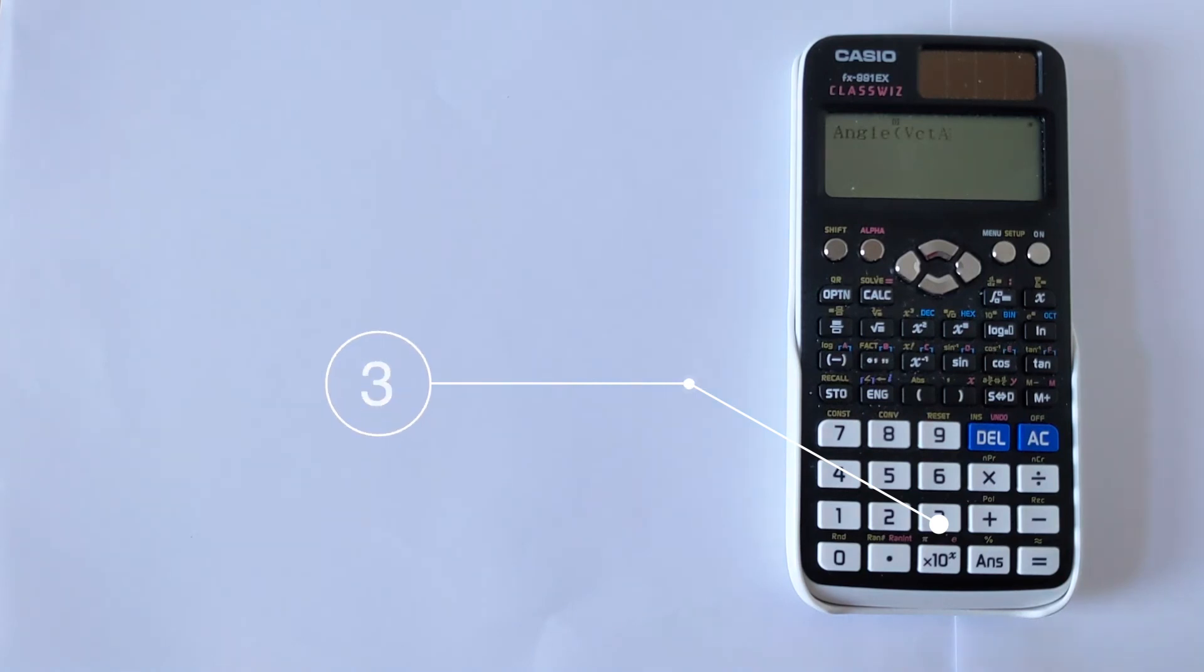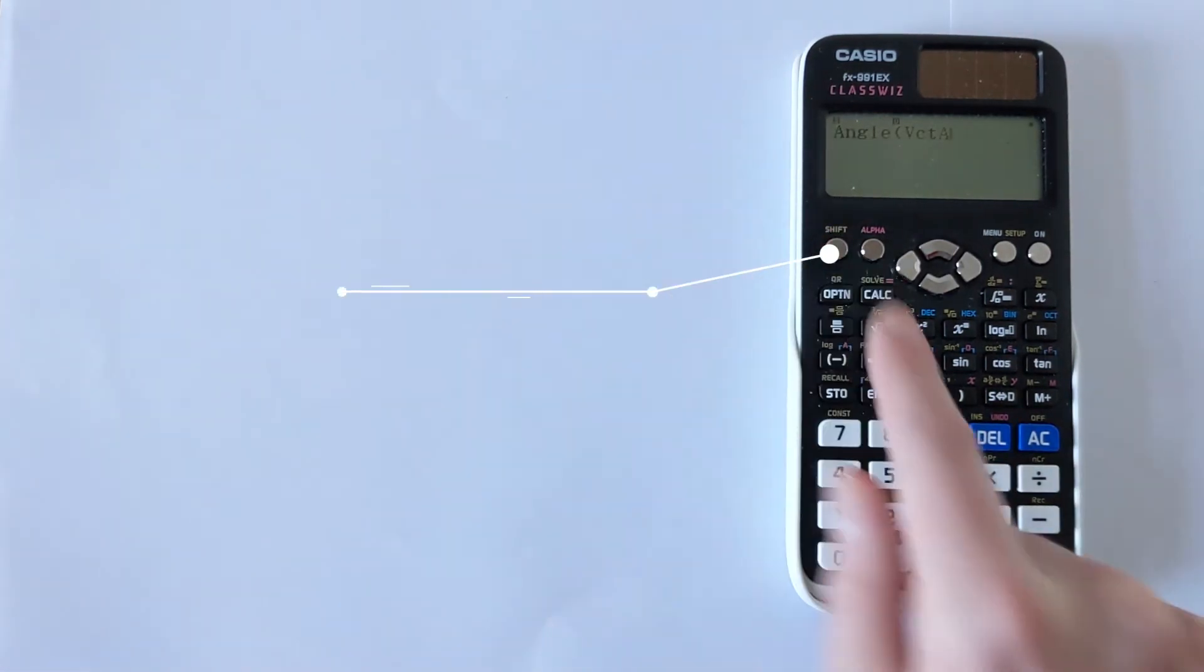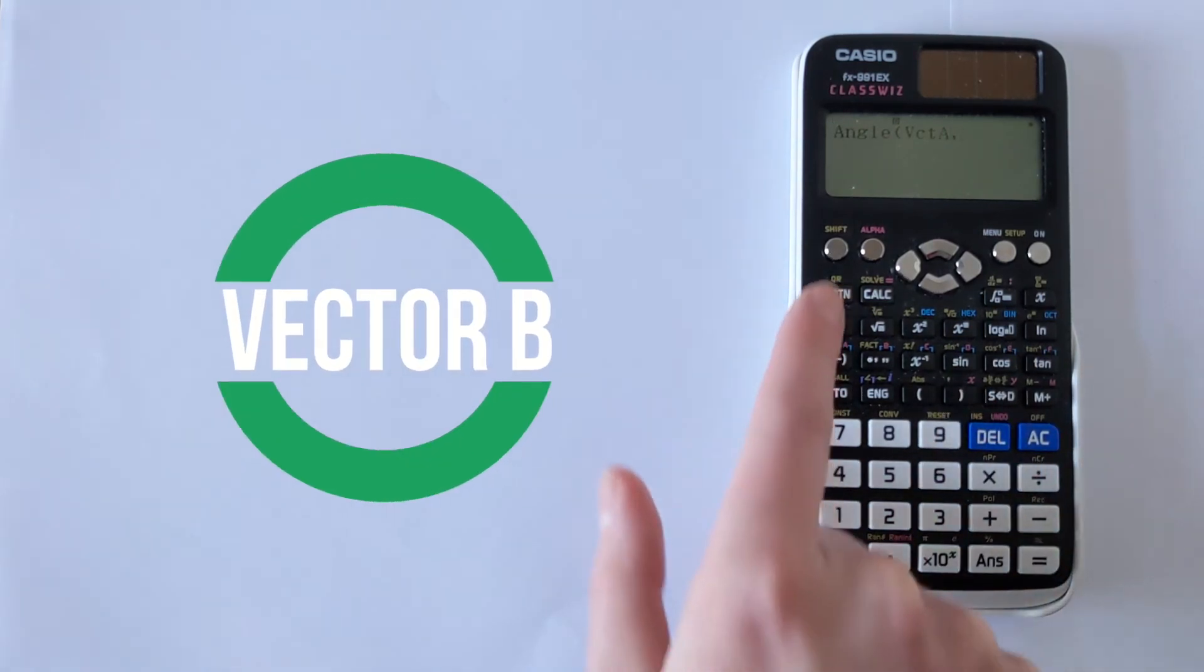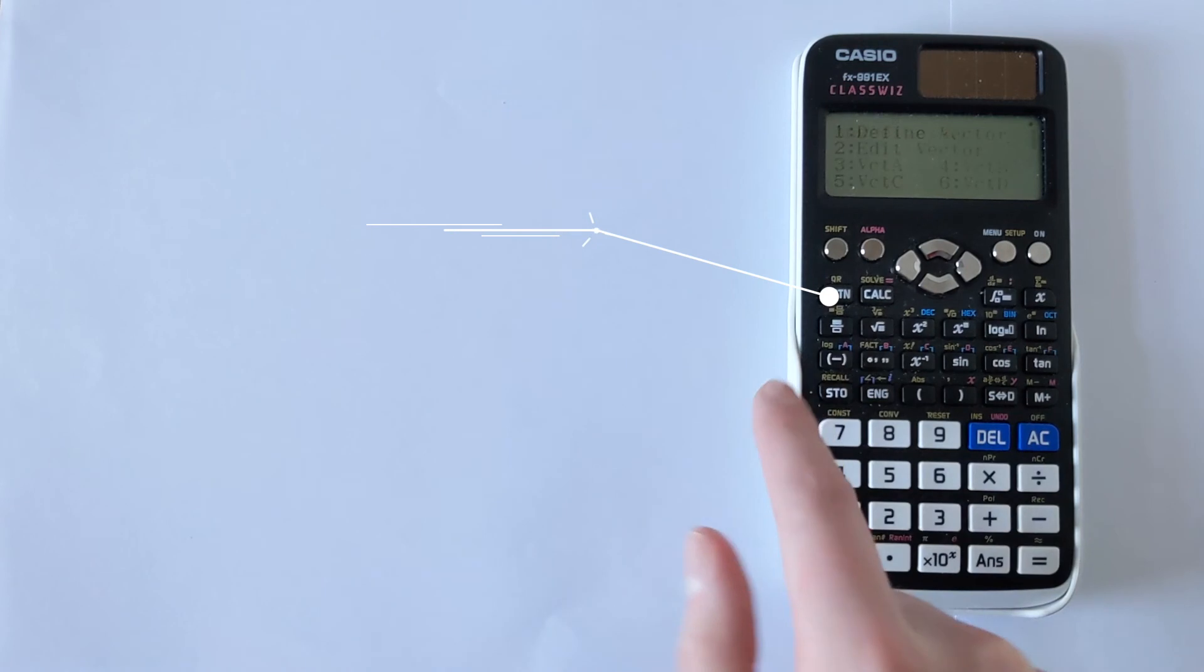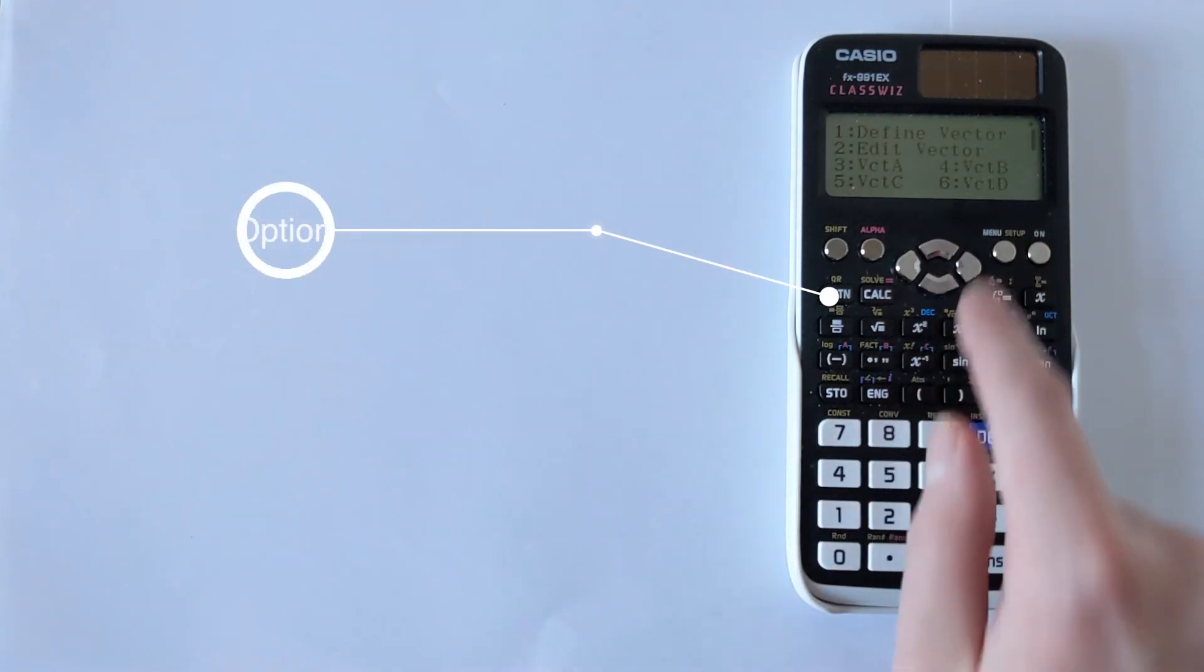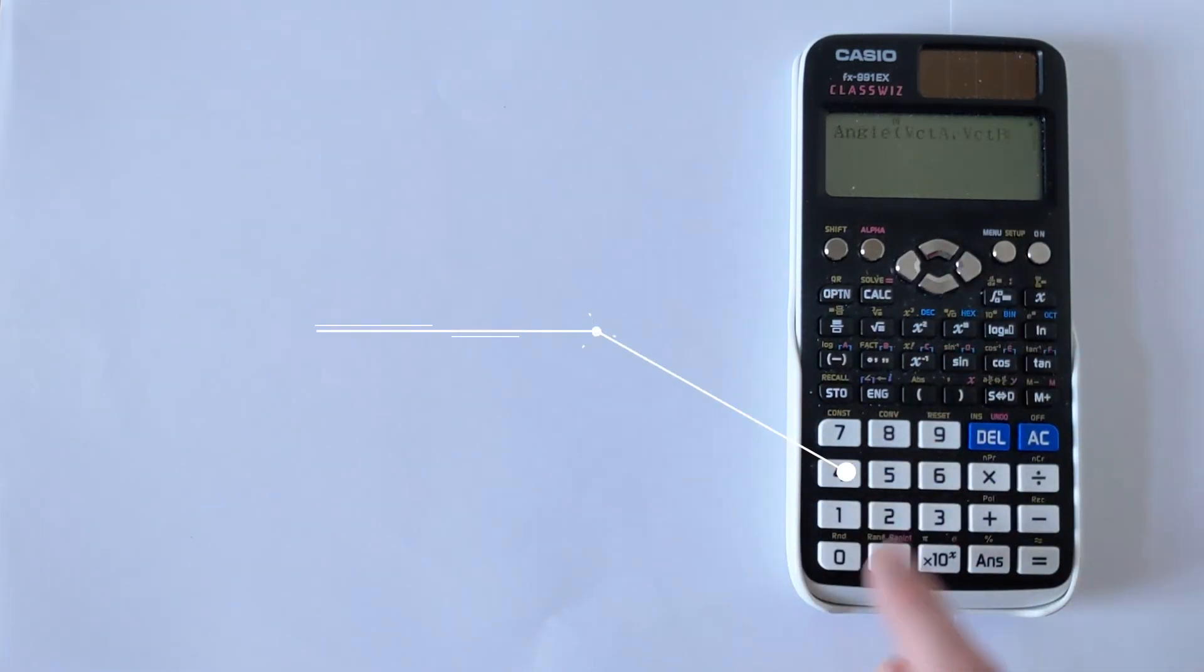Then we need a comma. To get a comma, you press shift. Then the close bracket has got a comma on it. Then we need to recall vector B, so you press option. Vector B is on option 4. Close the brackets and then press equals.